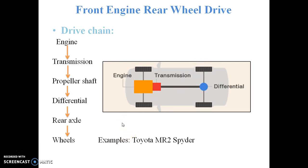The advantage of this layout is that there is a higher luggage carrying capacity. The disadvantage is that it requires a long propeller shaft to transmit drive from the engine to the differential. An example of this type of layout is the Toyota MR2 Spyder.